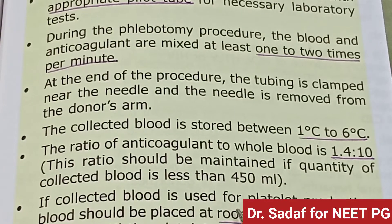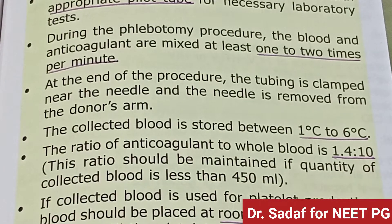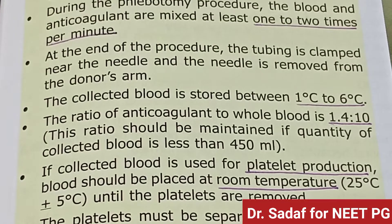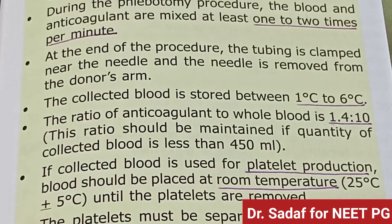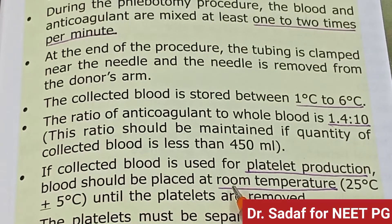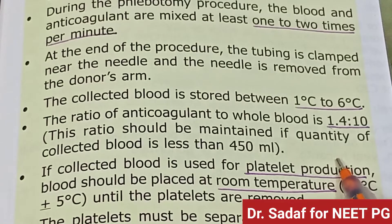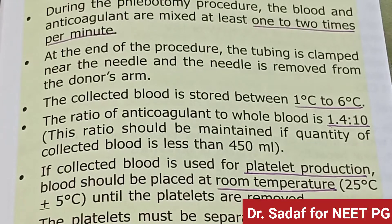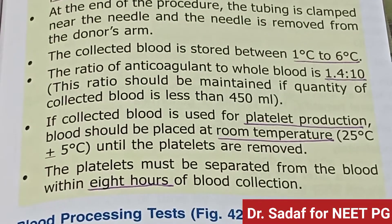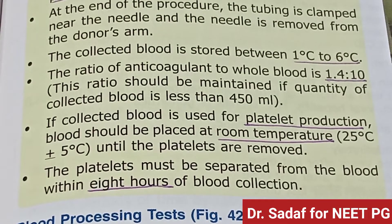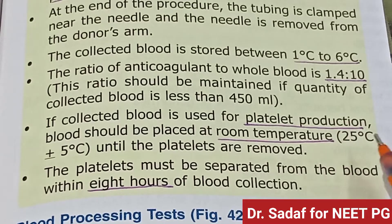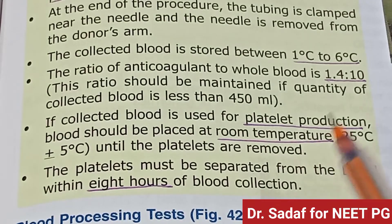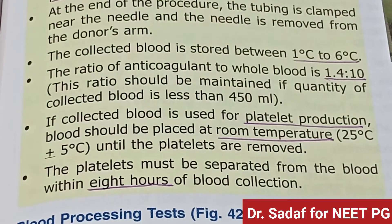The ratio should be maintained if the quantity of collected blood is less than 450 ml. If the collected blood is used for platelet production, it should be placed at room temperature until the platelet is removed. Platelets must be separated from the blood within 8 hours of blood collection.